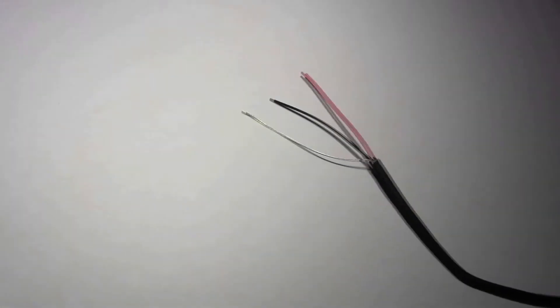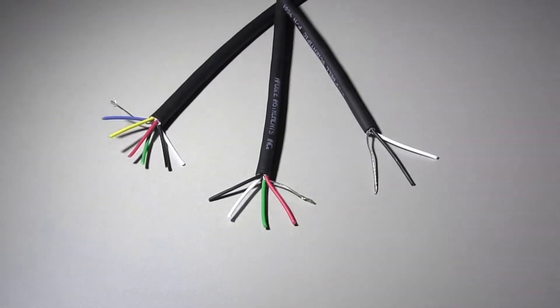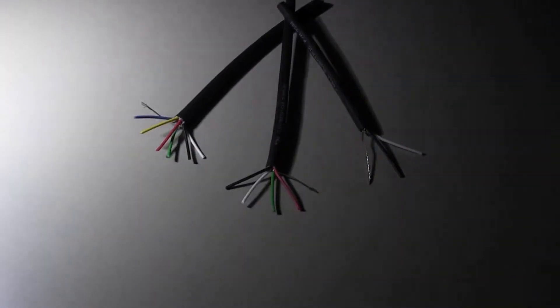In the following demonstration, we'll be using 26 gauge 2 conductor shielded cable. For other kinds of wire, the process is the same, but you will need an additional solder sleeve for each conductor.